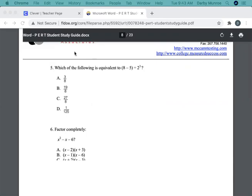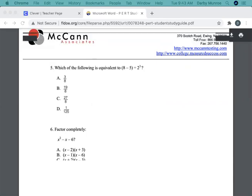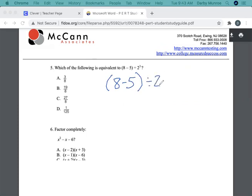Number 5. Which of the following is equivalent to 8 minus 5 divided by 2 to the third. So 2 to the third is the same thing as 2 times 2 times 2. 2 times 2 is 4 times 2 is 8. So 8 is 2 to the third. So we could say it's 8 minus 5. Well, they don't have that for any of the answers. So 8 minus 5 is how much? It's 3. So 8 minus 5 is 3. And then we're dividing it by 2 to the third or 8. So that would be A.